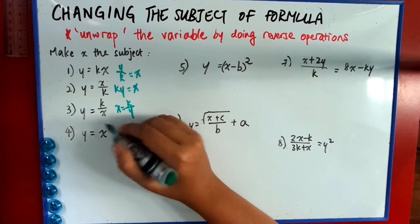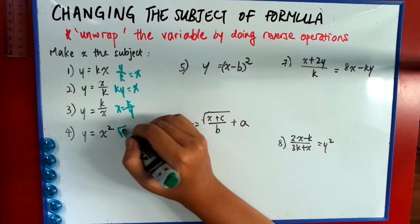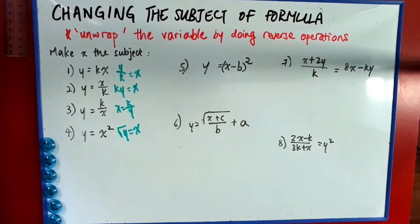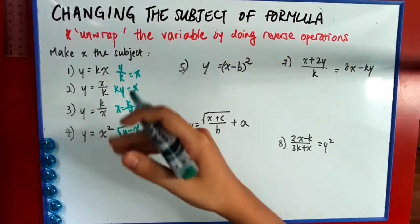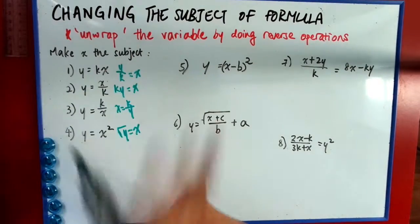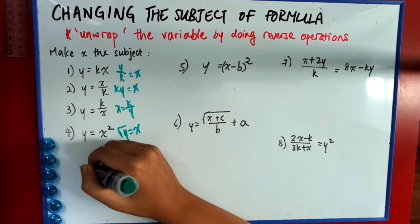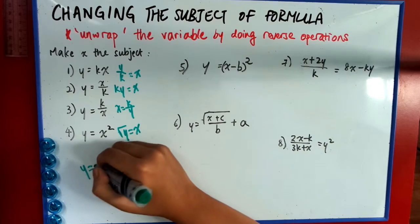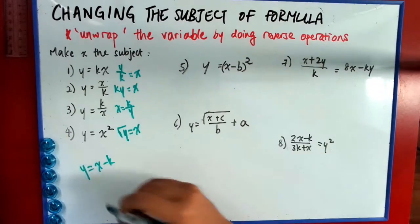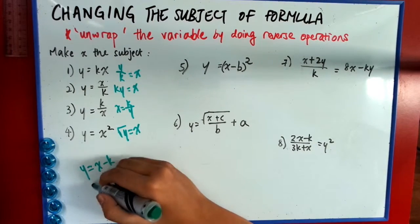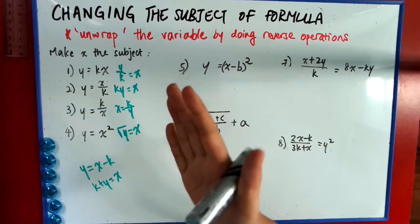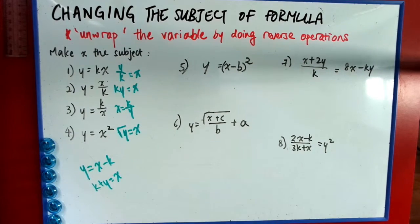So then this becomes very easy. It's actually x equals k over y, because I just swap the positions and I'm done. Example 4 is very easy as well. You just have to square root both sides. So square root y, you get x. So pretty straightforward. I did not talk about the addition and subtraction because I think those are very easy.